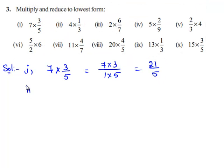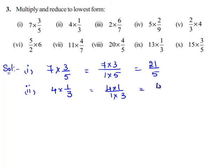Now let us move on to the second bit: 4 times 1 by 3. We multiply the corresponding numerators and denominators. So 4 times 1 divided by 1 times 3 gives 4 by 3. Since 4 and 3 do not have a factor in common, the lowest form of the fraction is 4 by 3.